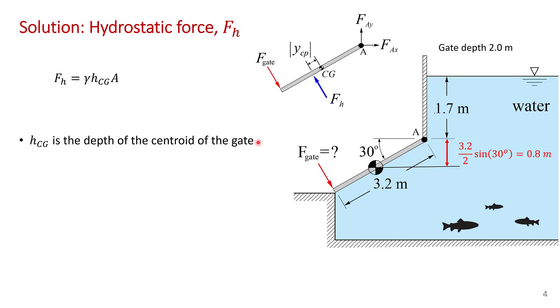Now the centroid of a rectangular gate is of course located at l upon 2. So we can take l upon 2 which is 3.2 meters upon 2 times sine theta which gives a depth of 0.8 meters. So the depth of the centroid is 1.7 meters plus 0.8 meters which is a total of 2.5 meters deep.